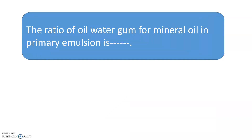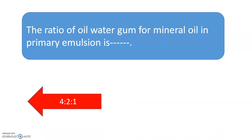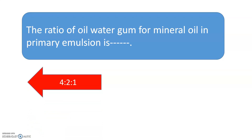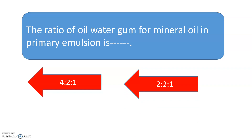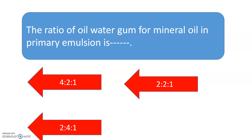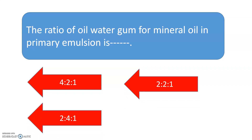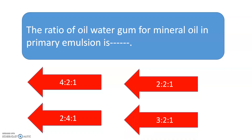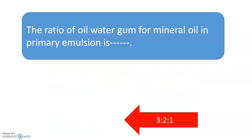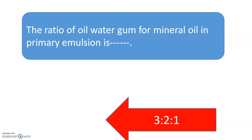The ratio of oil, water, and gum for mineral oil in the primary emulsion is? The correct answer is 3:2:1 — for mineral oil, the ratio is 3:2:1 in the primary emulsion.